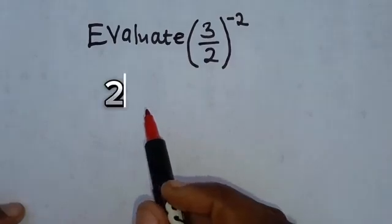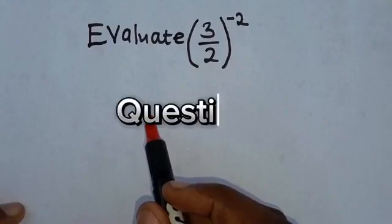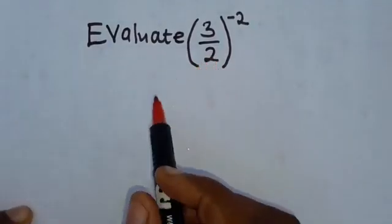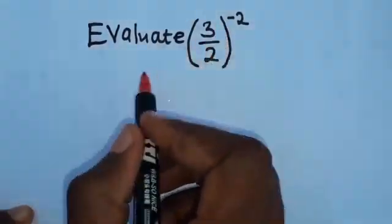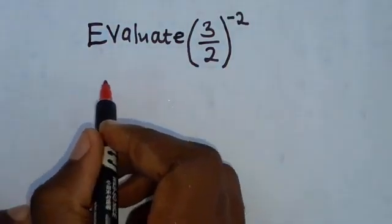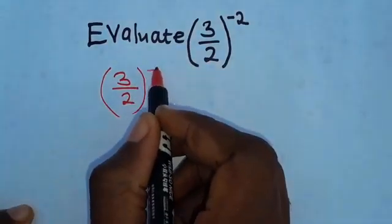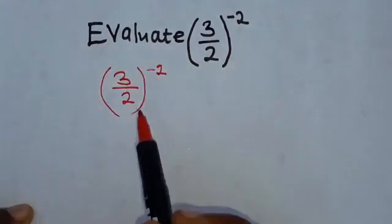In this video, we're going to look at the 2022 Mathematics Paper 1, Question 1 for internal candidates. The question says evaluate. Let's rewrite this expression that we are told to evaluate. The expression is 3 over 2 to the power negative 2. Now, what does it mean when they say evaluate?